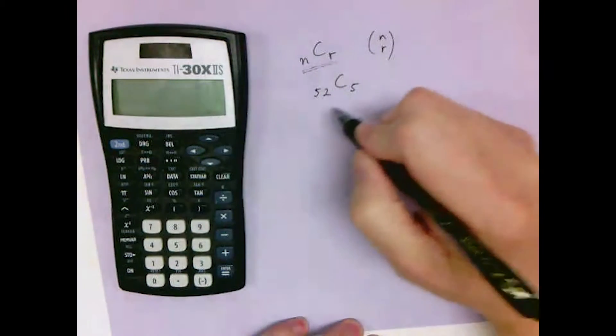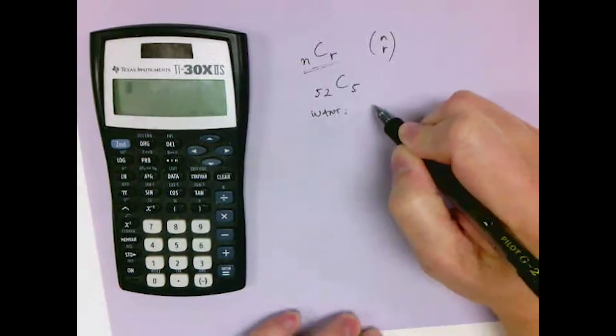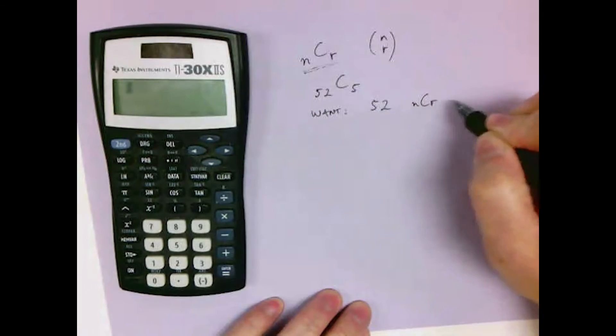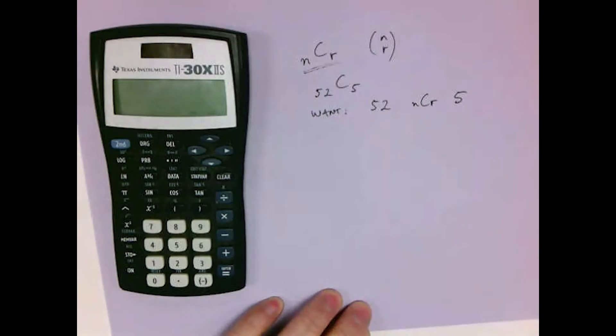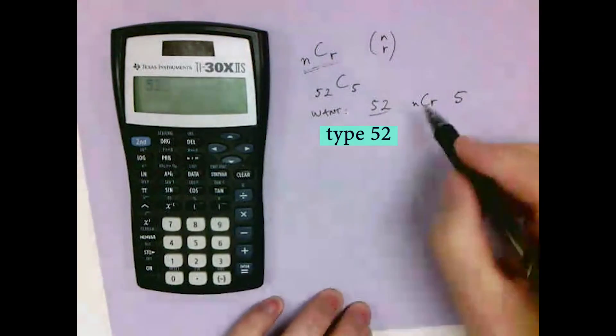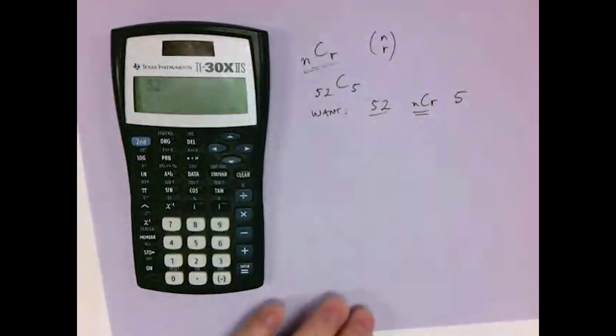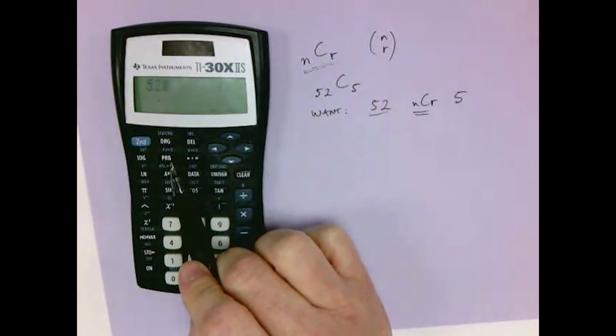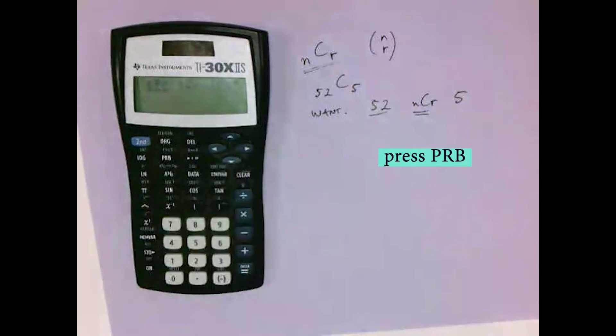On the TI30, we want to basically arrive at 52 NCR 5. First we press 52. Now we look for the NCR, it's under PRB, press PRB.